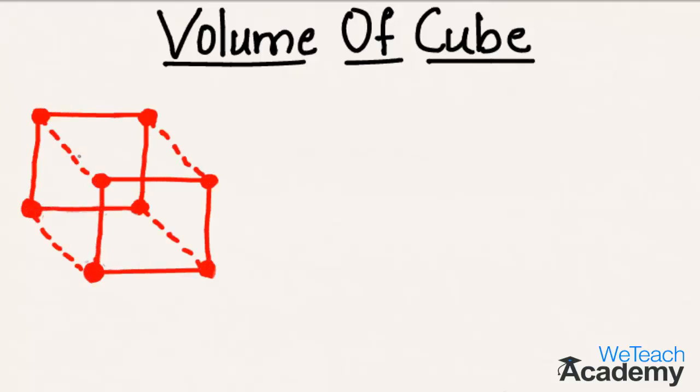We have a simple closed figure called a cube, and now we have to find the volume. Volume includes the length, breadth, and height of the cube. We get volume as area of base of the cube into the height of the cube. The base is in the form of a square, so area is given by the formula a square, that is side into side, into the height.